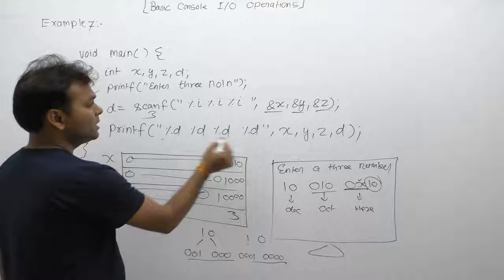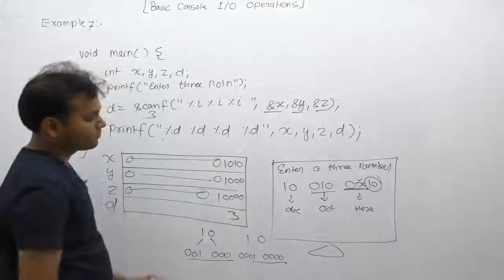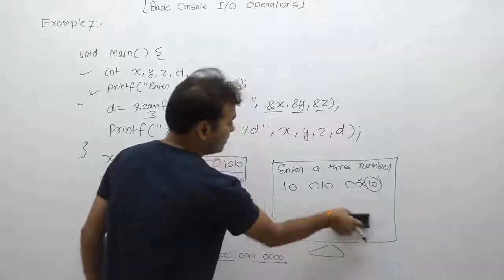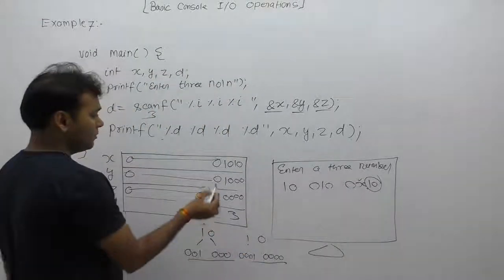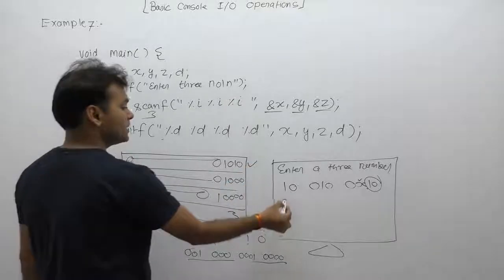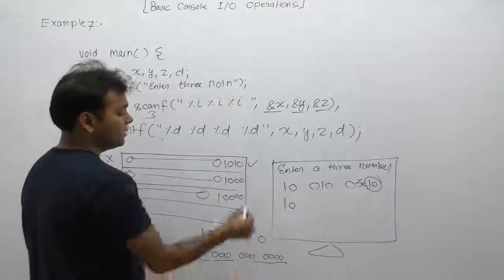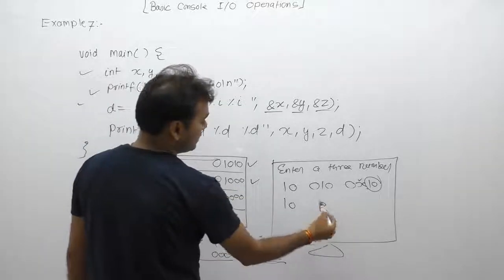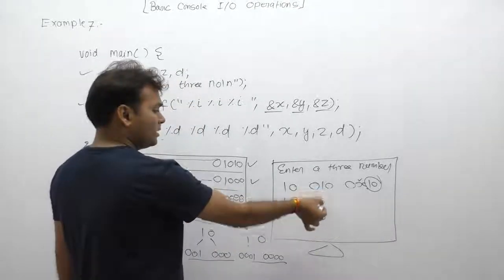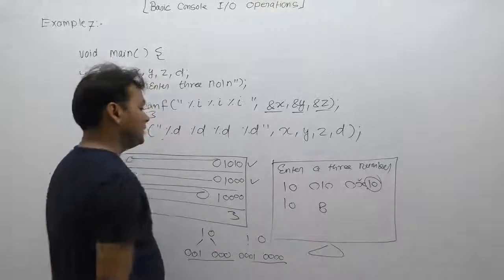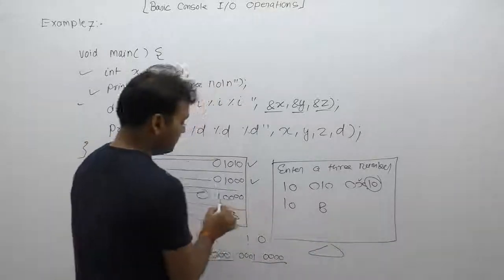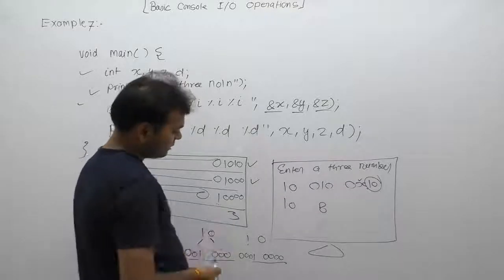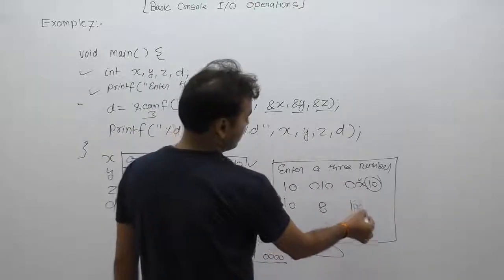In this case we have value display. Display case for x, y, z values in the form of decimal number system. Therefore equivalent value of x is 10, ultimately display as 10. Y ke respect mein equivalent decimal value is 8. This 1010 ki case mein 10 hai, 010 ki case mein 8. Hexadecimal ki case mein 2 to the power 4, 16. Value of d is finally 3.